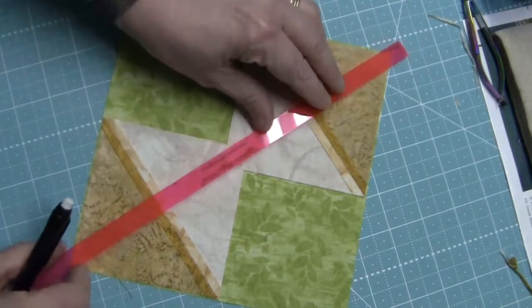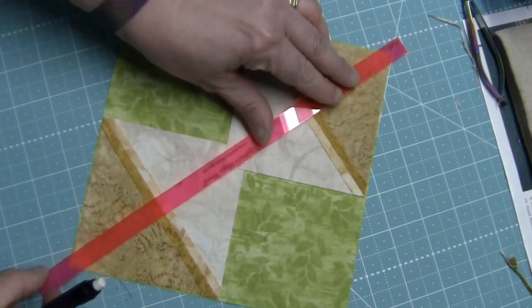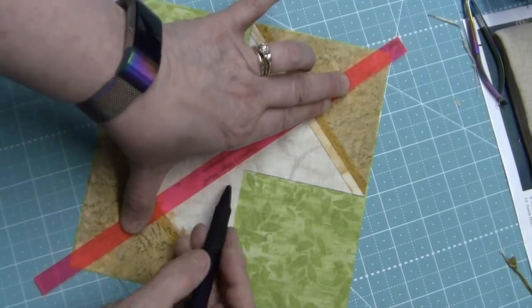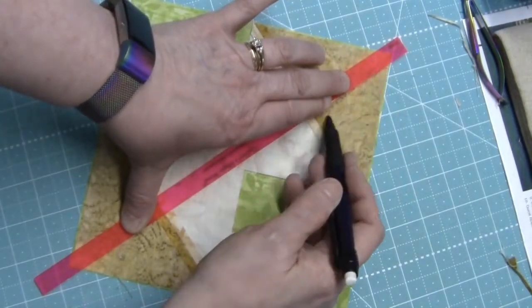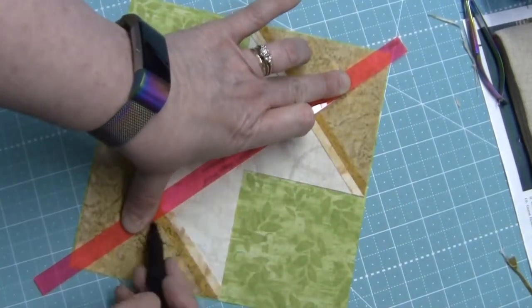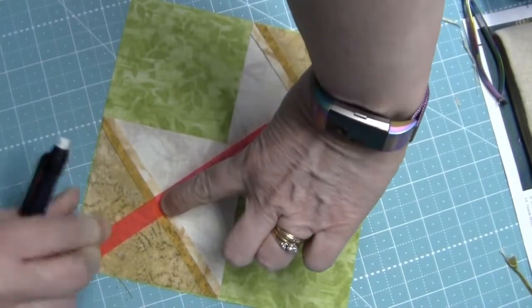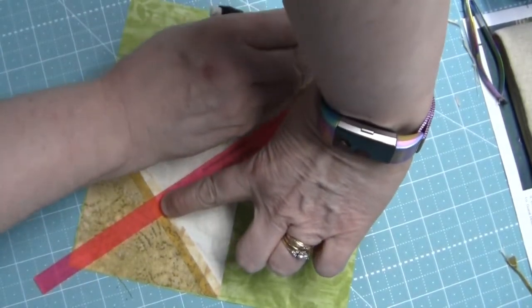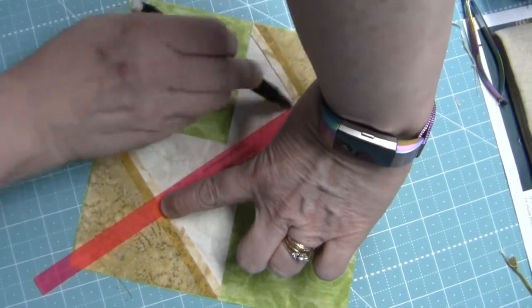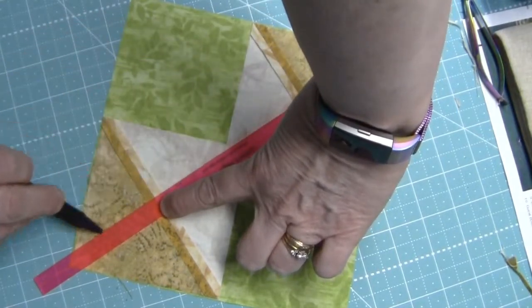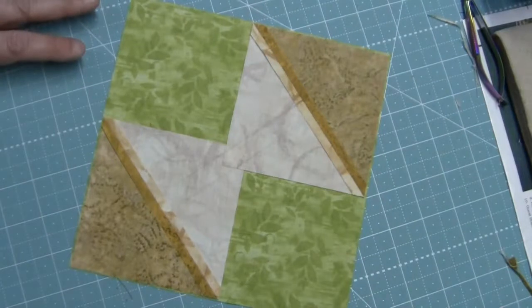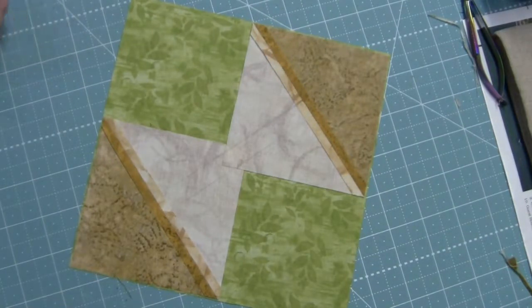I can kind of see them but not completely. I need to draw a little darker. Let me just go over this again on both sides. Make sure I can see what I'm going to sew - these are the sew lines. So I'm going to sew on those two lines and I'll meet you back here for the next step.